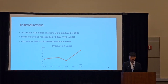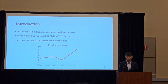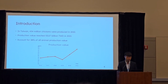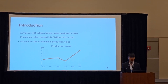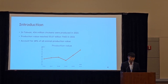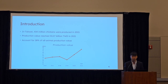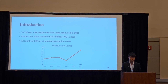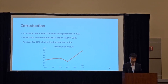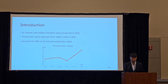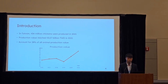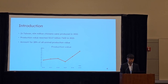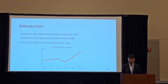Chicken is one of the most important species in Taiwan's animal husbandry. According to the Animal Statistics Code report, in Taiwan, 434 million chickens were produced in 2021, and the production value reached 53 billion Taiwan dollars. It accounts for 28% of all animal production value, and the chart below shows that the production value is growing year by year since 2019.